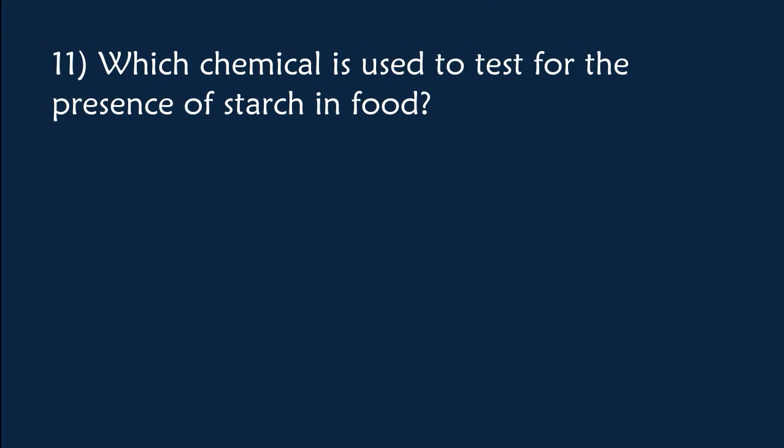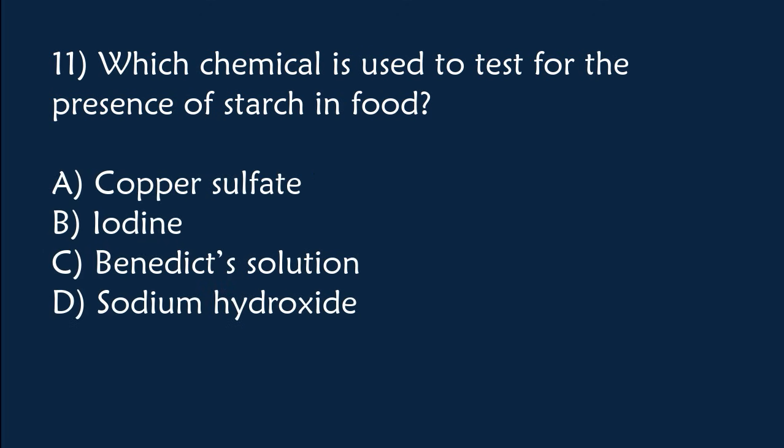Which chemical is used to test for the presence of starch in food? A) Copper sulphate, B) Iodine, C) Benedict solution, D) Sodium hydroxide. The correct answer is Option B, iodine.